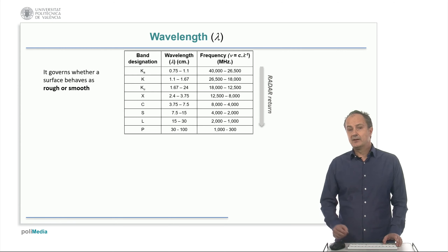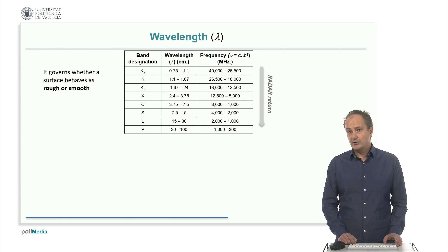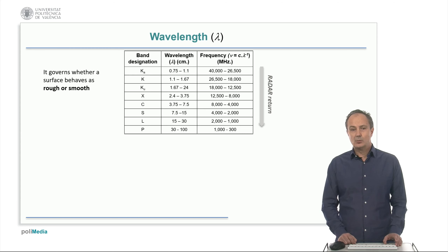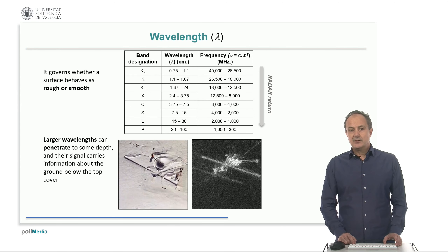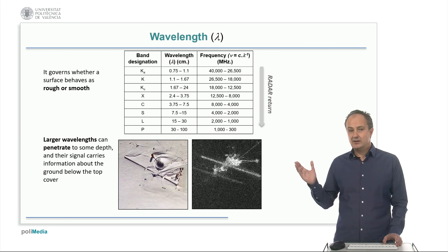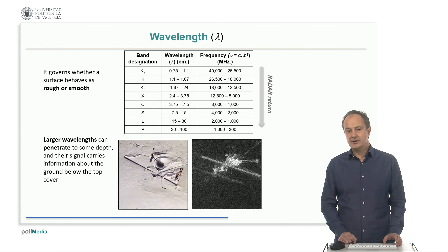This table shows the wavelength and frequency intervals of the principal radio spectral bands, which are commonly referred to by letters from K to P in increasing wavelength. The radar return is directly related to the wavelength at which it operates. Wavelength governs whether a surface behaves as rough or smooth. In addition, the larger the wavelength, the deeper the signal can penetrate, carrying some information about the underground, as we can see in this comparative example of a visible image on the left and a radar image on the right.